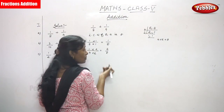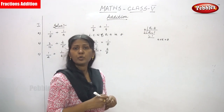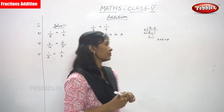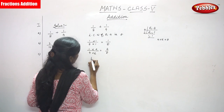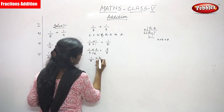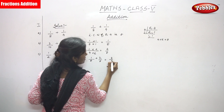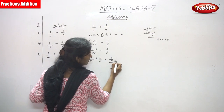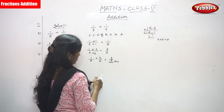If the denominators are the same, you have to add the numerators. So 1 by 8 plus 2 by 8 gives 3 by 8. The answer is 3 by 8.